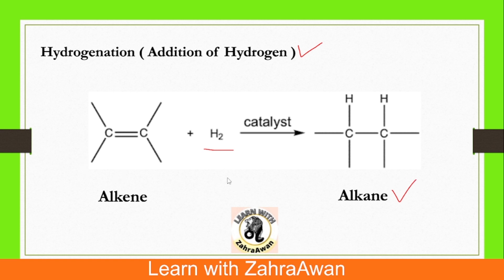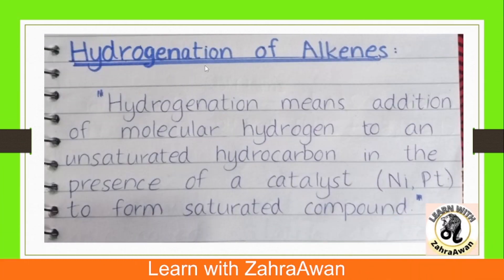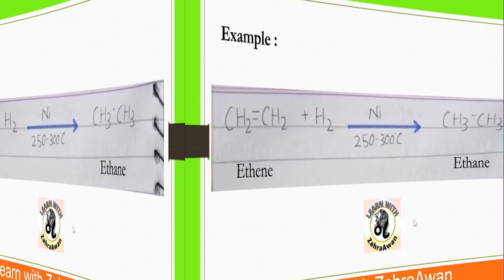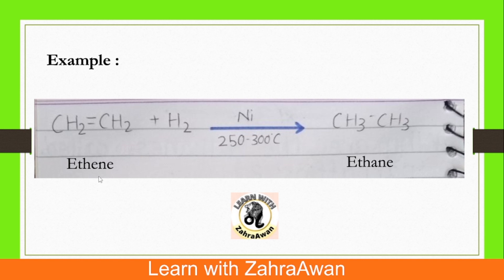Question number 4: What do you know about the hydrogenation of alkenes? Hydrogenation converts unsaturation to saturation using a catalyst. Hydrogenation of alkenes involves the addition of molecular hydrogen in the presence of a catalyst such as nickel or platinum. For example, when we perform hydrogenation of ethene in the presence of nickel at a certain temperature, it becomes ethane.